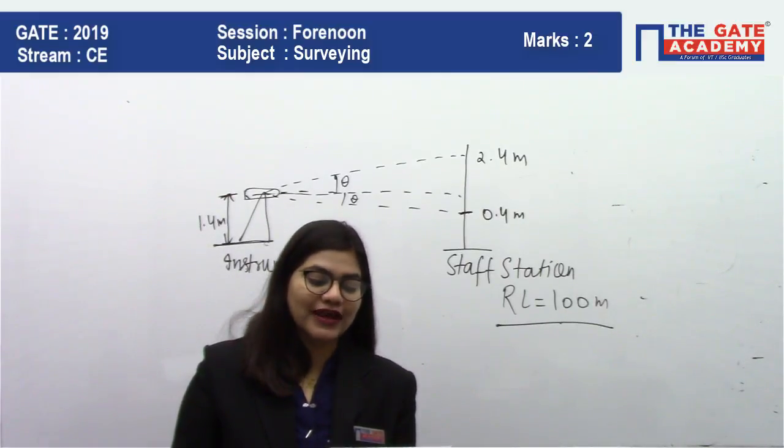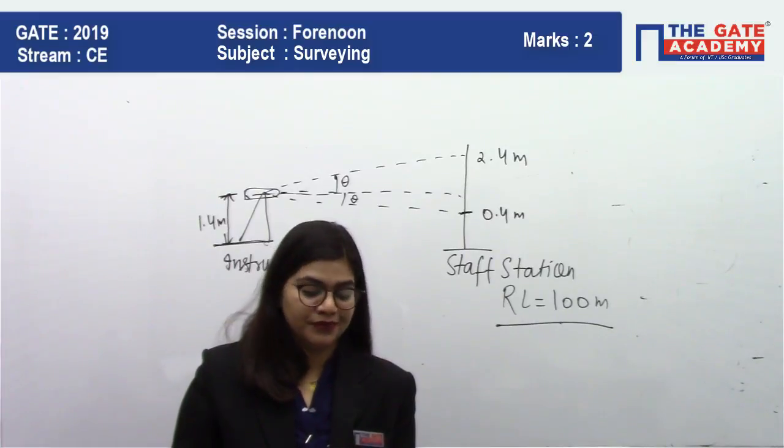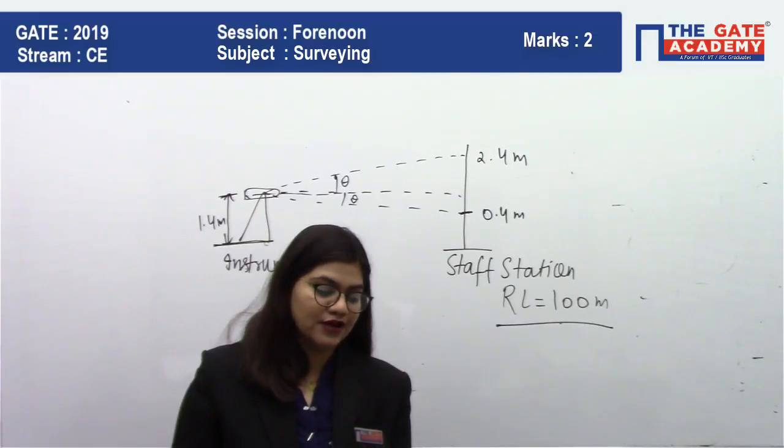A theodolite is placed 50 meters away from the staff, and RL of the place where the staff is placed is 100 meters. It measures vertical angle from horizontal at staff readings of 0.4 and 2.4 meters, which are the same.